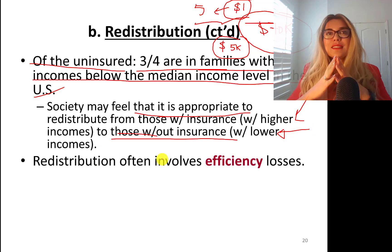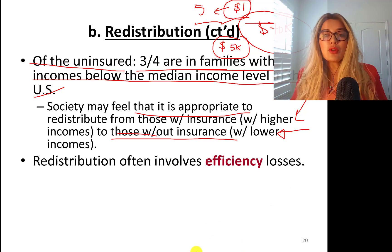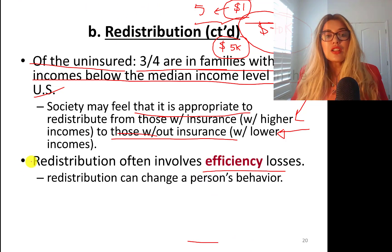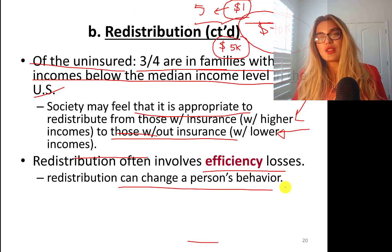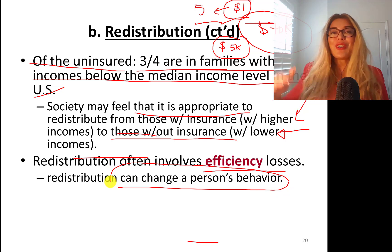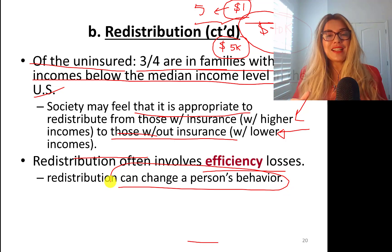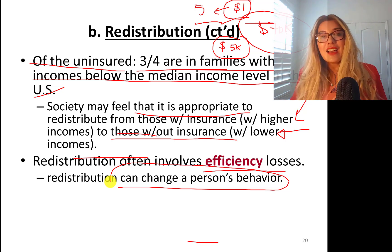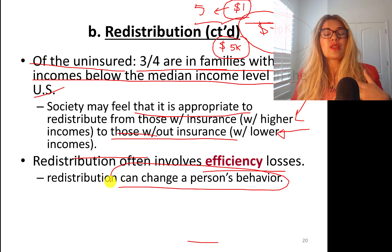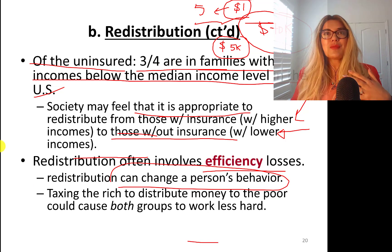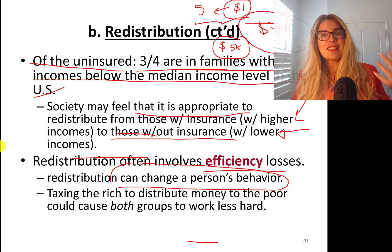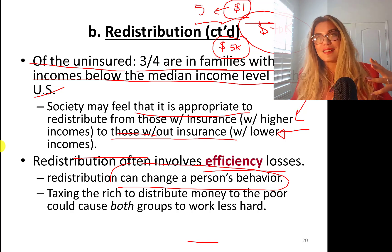Redistribution often involves efficiency losses — it may not be the most efficient approach, but it achieves a more educated population. Redistribution can change behavior, such as motivating a first-generation student to go to college. As we've seen in labor economics, people with college education make much more — roughly double the earnings of high school graduates. So paying taxes to benefit college students creates wealthier future generations who will pay more taxes.